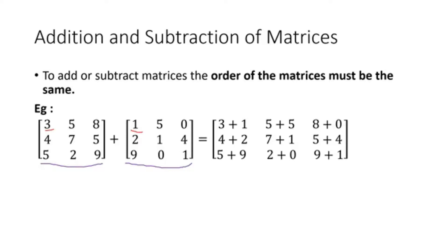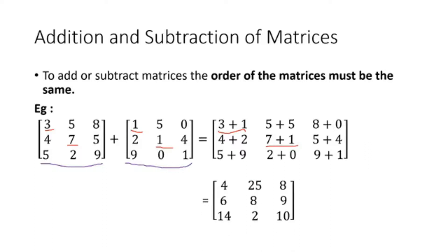The first element of the first matrix is three and the first element of the second matrix is one, so we write three plus one. The middle element is seven in one matrix and one in the other, so we write seven plus one. Likewise, all nine elements in both matrices are added correspondingly. Three plus one is four, seven plus one is eight, and so on. If you are subtracting, you do the same thing — only the sign changes to subtraction.